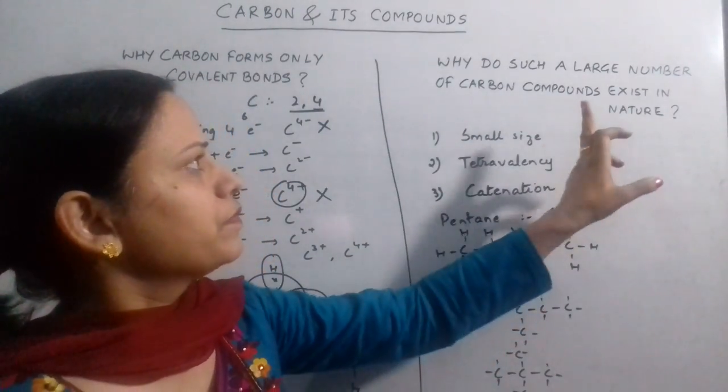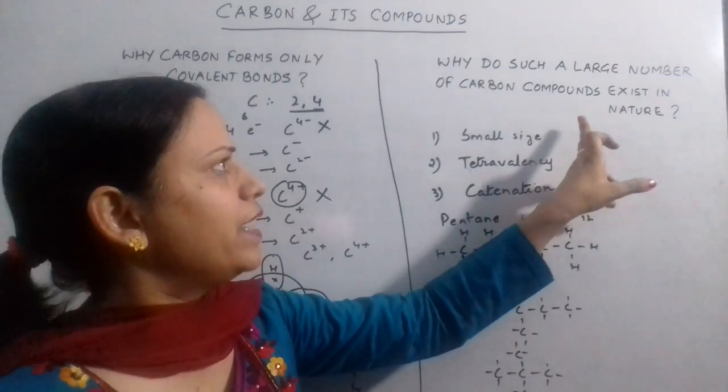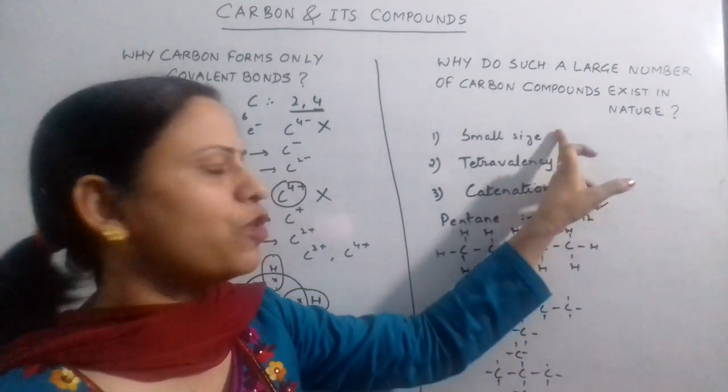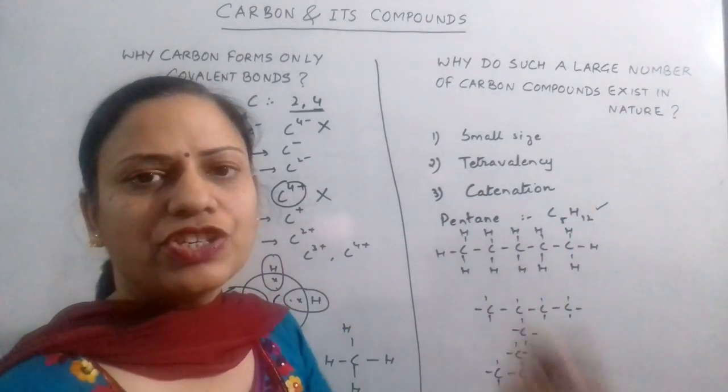To recapitulate, carbon forms a wide number of compounds in nature because of three possible reasons: small size, tetravalency, and catenation.